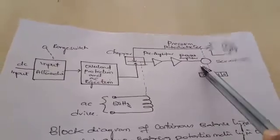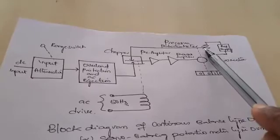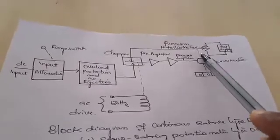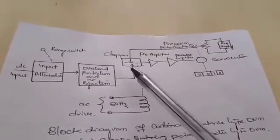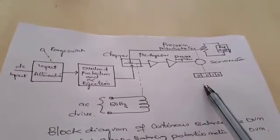This servo motor sends a signal to the potentiometer arm in such a way that the arm adjusts so that both the voltages after comparison become zero, and the final output is displayed in the digital readout.